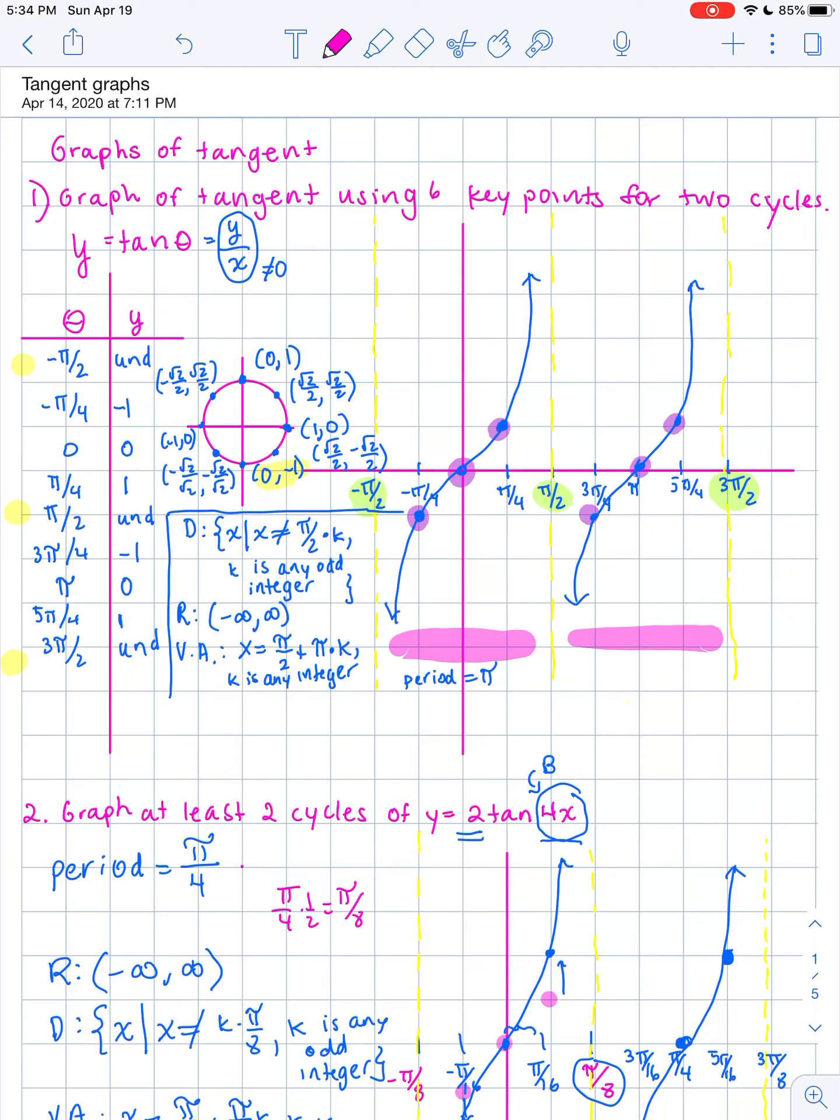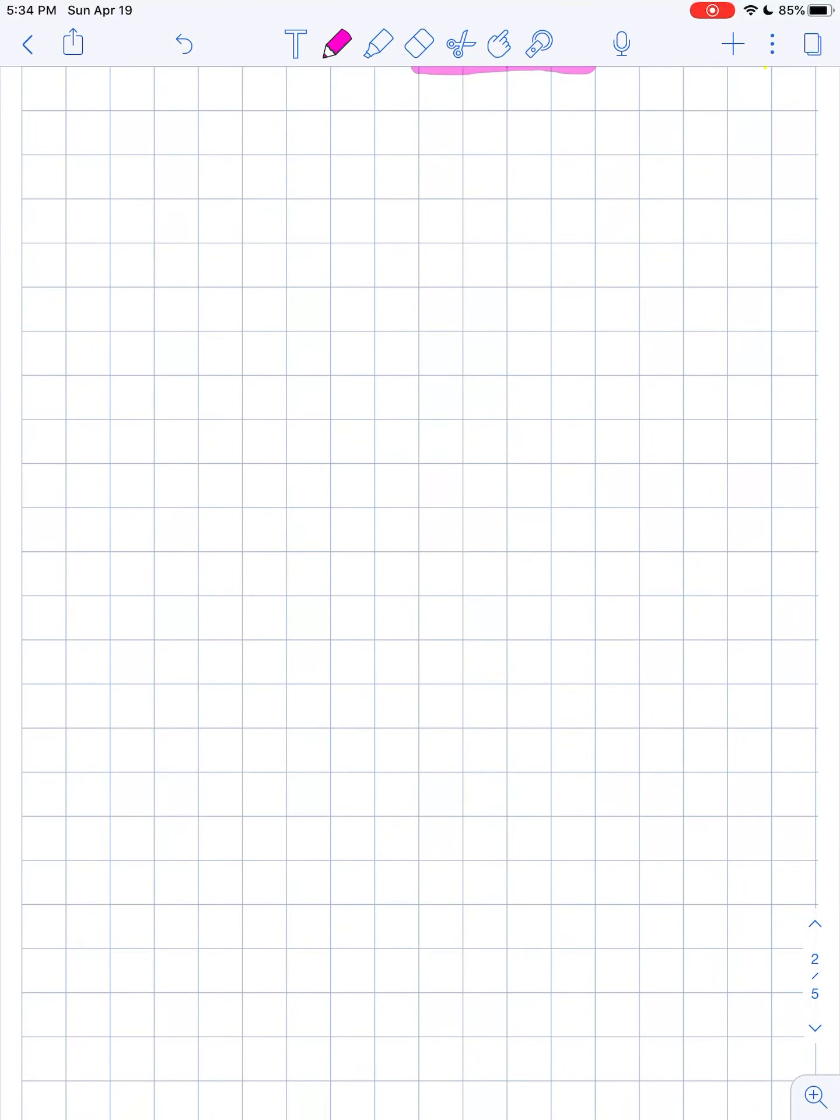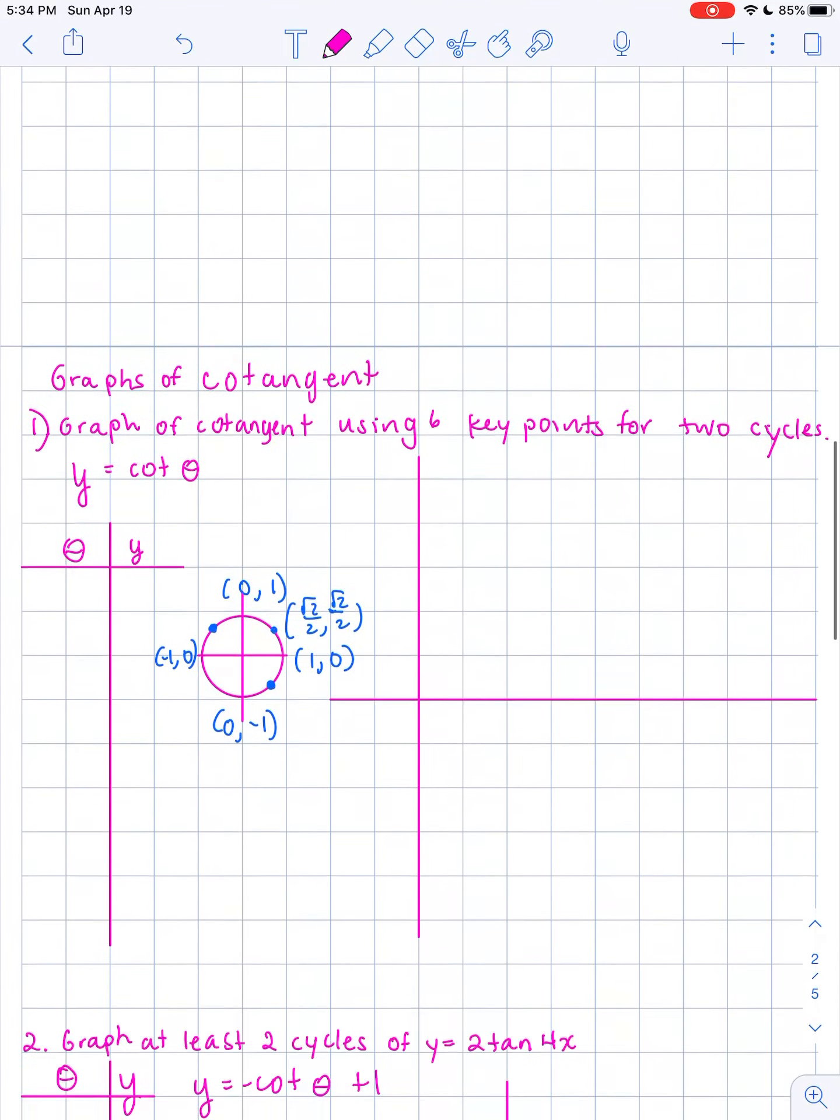The reason why I did that was I wanted to show the very first cycle of the tangent function is part of it is on the negative x side and then part of it is on the positive x side. Just keep in mind that the cycles continue all the way on to negative infinity and positive infinity in both directions. This just so happens to ask for two cycles, so I graphed it from negative π over 2 to positive 3π over 2.